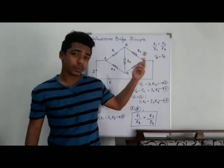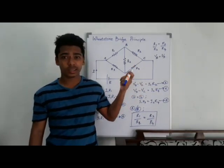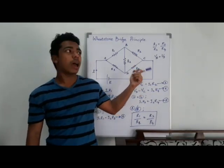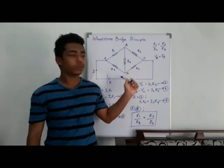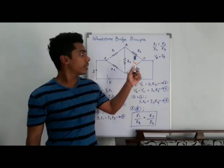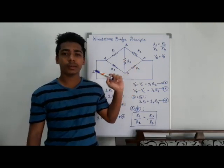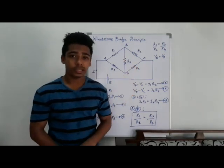It says if we have a system of resistors connected to a circuit in such an arrangement, and if the ratio between these two resistors is equal to the ratio between these two resistors, then B and D potential become same. So we say the bridge is balanced.